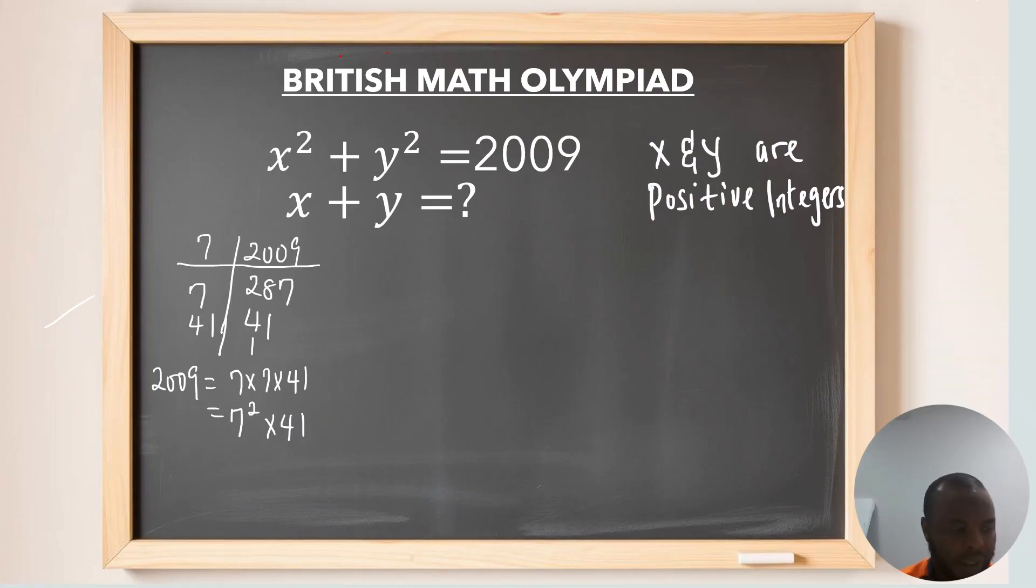So, using this technique here, let our x to be equal to 7a. And let y to be equal to 7b.